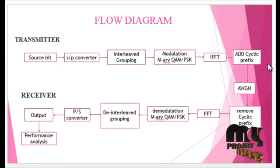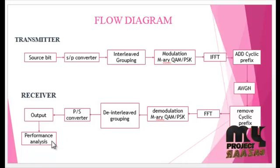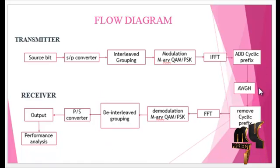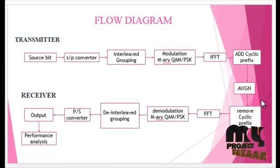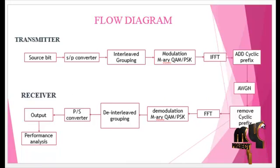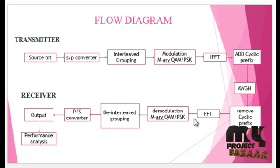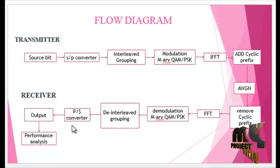Cyclic prefix refers to prefixing of symbols with a repetition of the end, and then white Gaussian noise is added. The reverse process of transmission is performed in the receiver section: remove the cyclic prefix, perform FFT, demodulate the signal, apply interleaved grouping, and parallel-to-serial conversion to get the output.